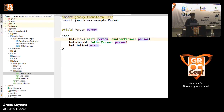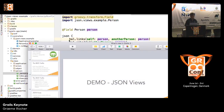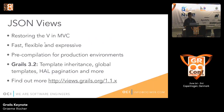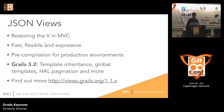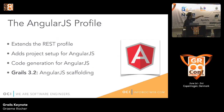That's JSON views. They're pre-compiled for production environments using Gradle. In Grails 3.2 and JSON views 1.1, there's a whole bunch of new features: template inheritance, global templates, pagination. Check out the docs at that link.